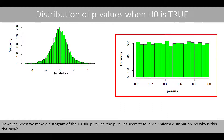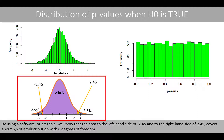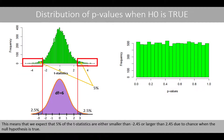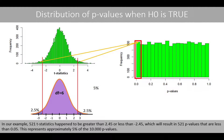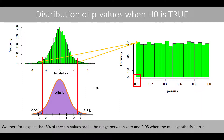So, why is this the case? By using software or a t-table, we know that the area to the left-hand side of negative 2.45 and to the right-hand side of positive 2.45 covers about 5% of the t-distribution with 6 degrees of freedom. This means that we expect 5% of the t-statistics are either smaller than negative 2.45 or larger than positive 2.45 due to chance when the null hypothesis is true. In our example, 521 t-statistics happen to be greater than 2.45 or less than negative 2.45, which will result in 521 p-values that are less than 0.05. This represents approximately 5% of the 10,000 p-values. We therefore expect that 5% of these p-values are in the range between 0 and 0.05 when the null hypothesis is true.